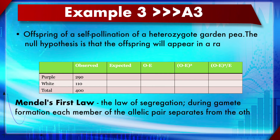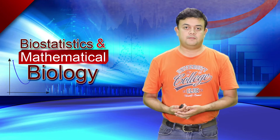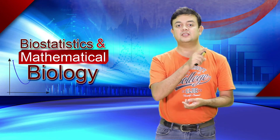Example 3: offspring of self-pollination of a heterozygote garden pea. The null hypothesis is that offspring appear in the ratio 3/4 dominant (purple) to 1/4 recessive (white), from Mendel's first law — the law of segregation. With fo already available, fe can be calculated from this 3:1 ratio and the chi-square test performed.